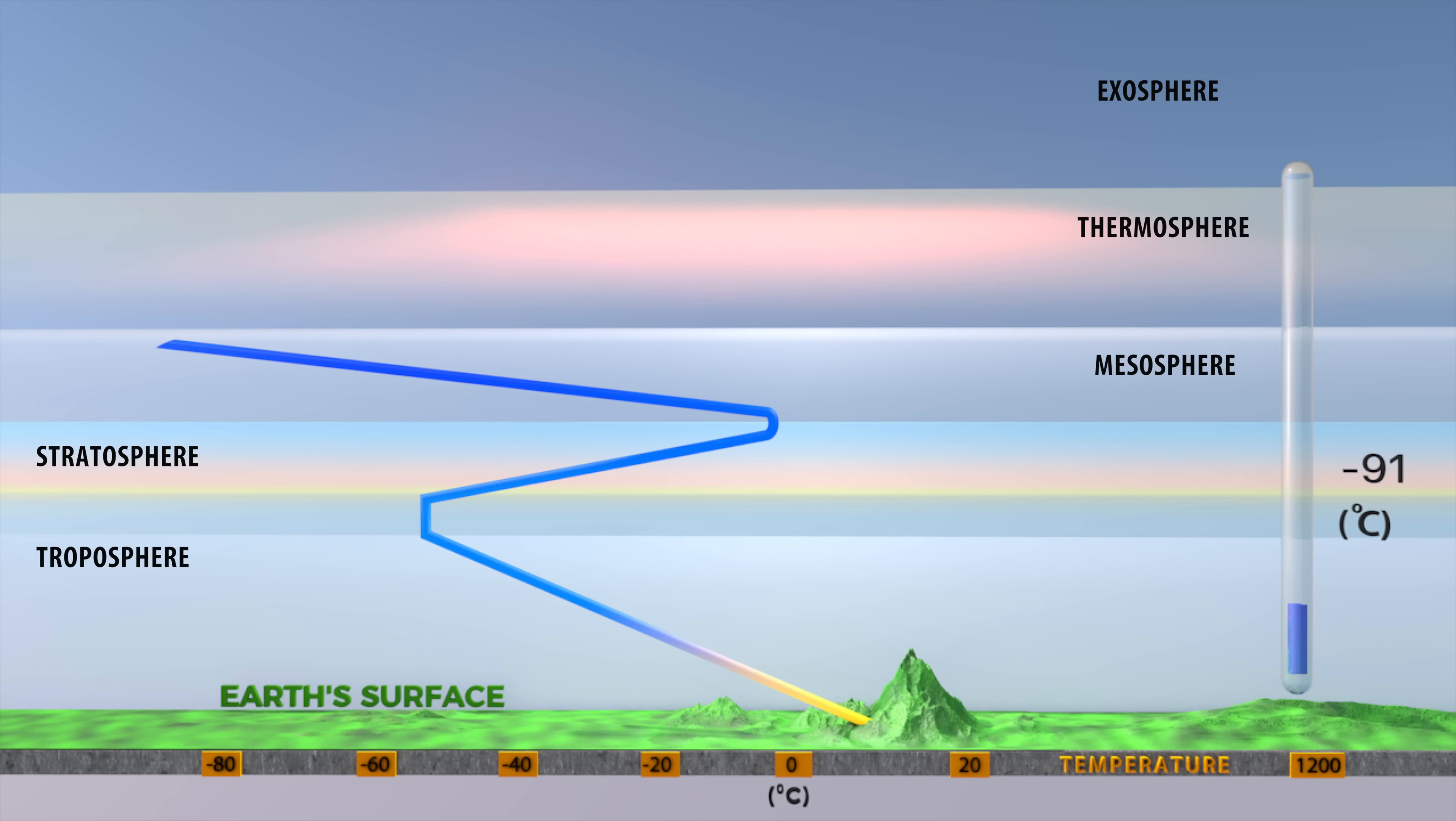Then, the temperature ranges from negative 2 degrees Celsius to negative 92 degrees Celsius at the upper boundary of the mesosphere.